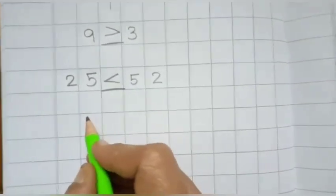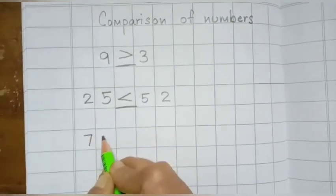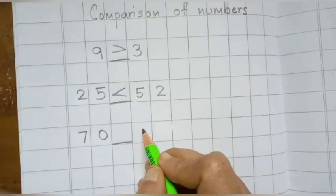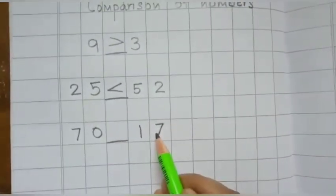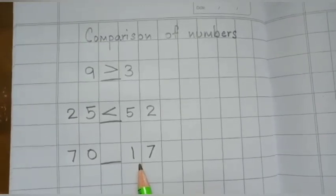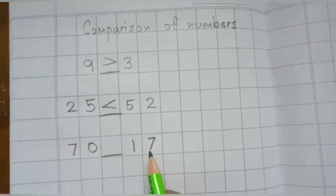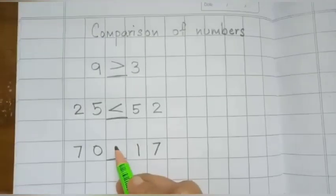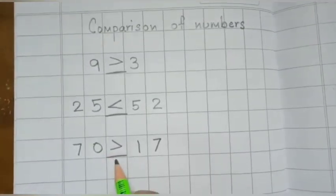I will give you one more example so that it becomes clear to you. Suppose I write here 70, and on the other side I write 17. One side 70, another side 17. Now children, which number is bigger — 70 or 17? Number 70 is bigger. So imagine number 70 as the big fish and number 17 as the small fish, and then we make the crocodile's mouth open towards the big fish. That is, number 70 is bigger than number 17.